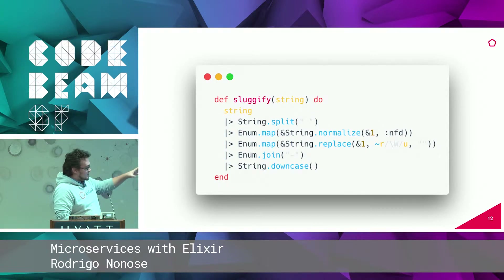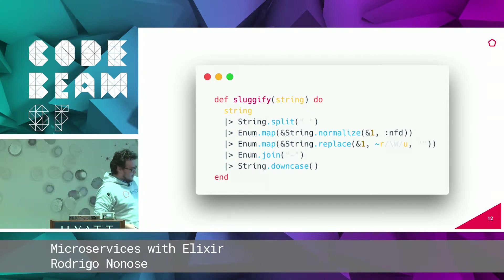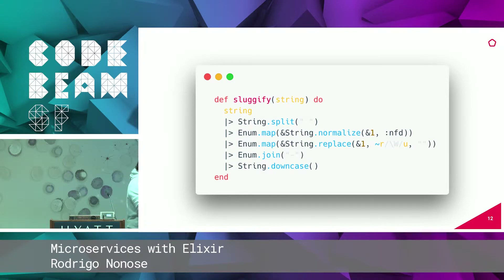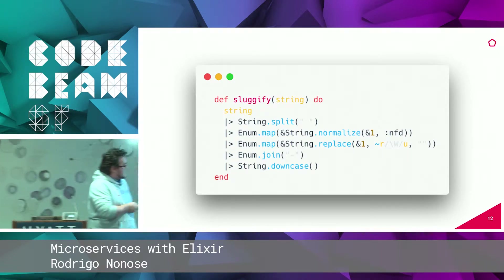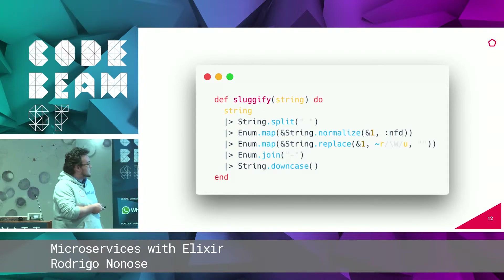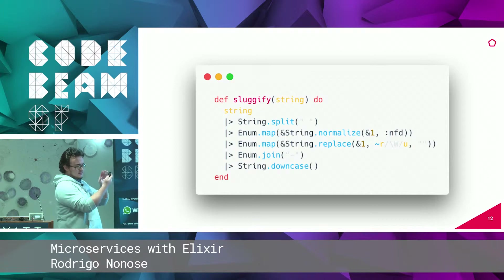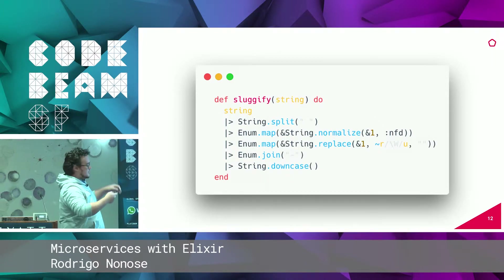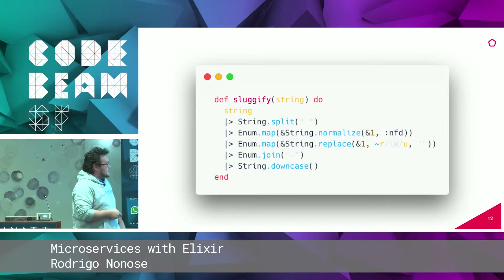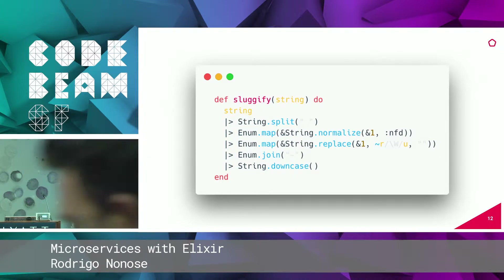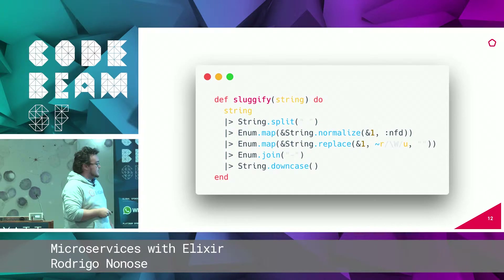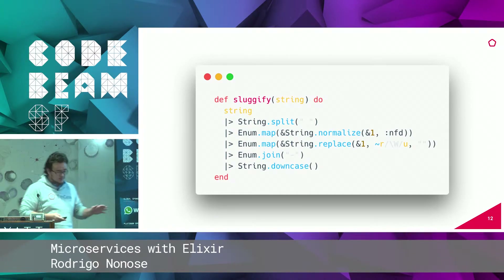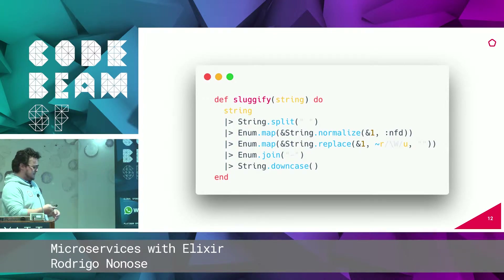A simple example I always use for Elixir is a simple slugify function. It has a macro, it uses a pipe that passes a parameter to a function. So you can more easily read code linearly instead of using temporary variables or cascading calls. It has functions as first class — you can pass a function as a parameter — and higher-order functions, which receive a function and apply it. It's a good, beautiful piece of code.